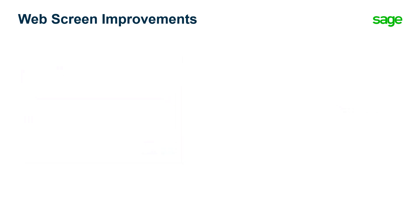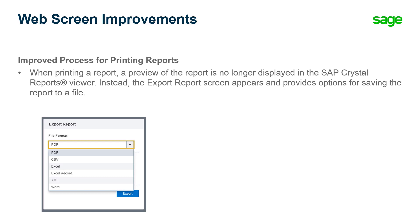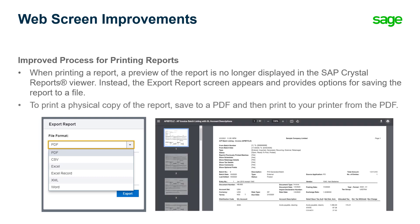This release introduces an improved process for printing reports. When printing a report from a report screen or a homepage widget, a preview of the report is no longer displayed in the SAP Crystal Reports Viewer. Instead, the Export Reports screen appears in a new browser tab and provides options for saving the report to a file. To print a physical copy of the report, save to a PDF and then print to your printer from the PDF.